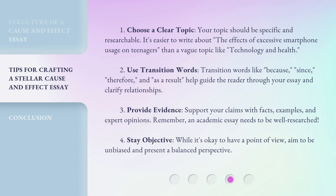1. Choose a clear topic. Your topic should be specific and researchable. It's easier to write about the effects of excessive smartphone usage on teenagers than a vague topic like technology and health. 2. Use transition words. Transition words like because, since, therefore, and as a result help guide the reader through your essay and clarify relationships.